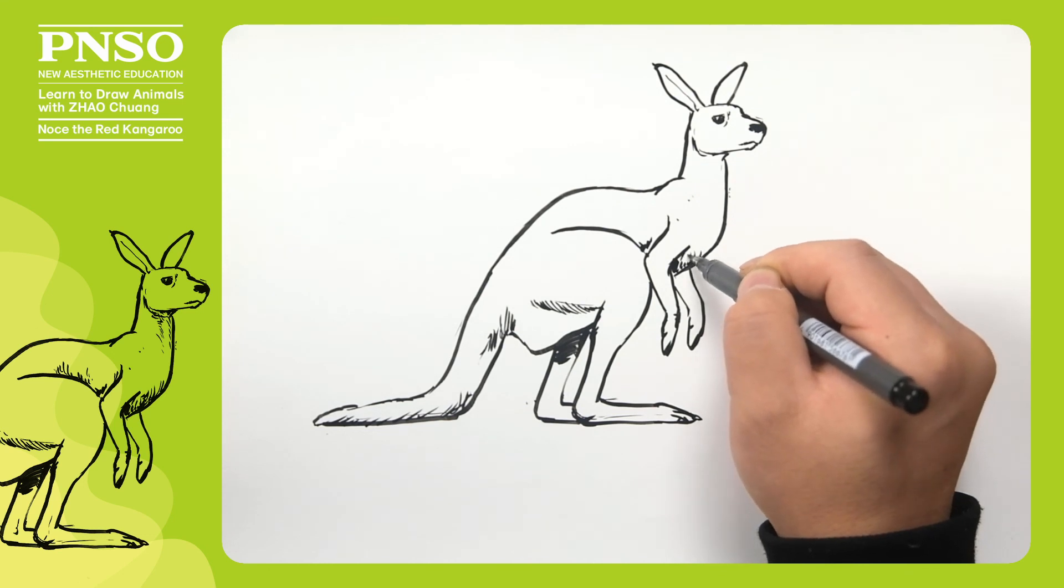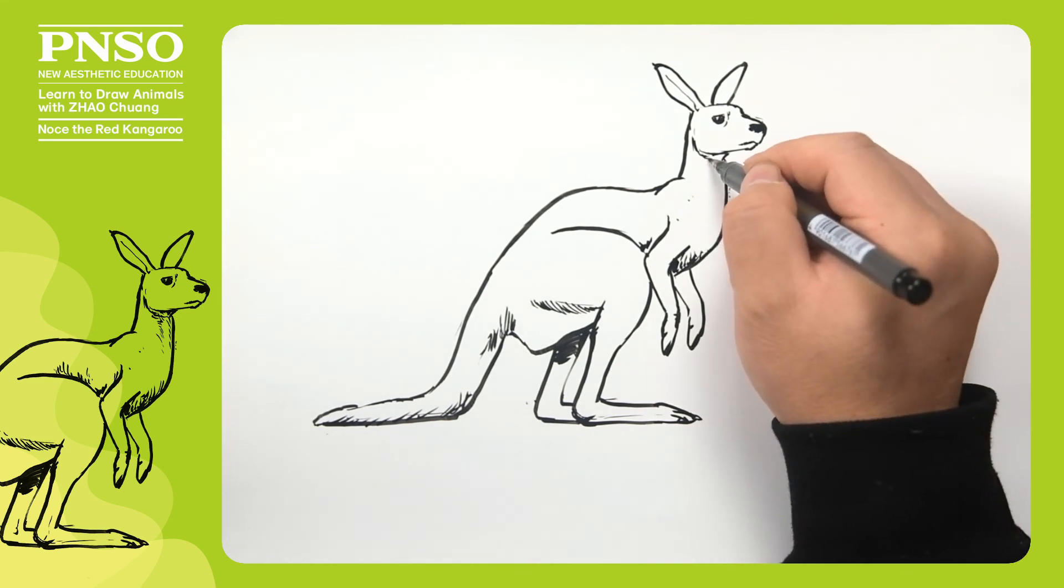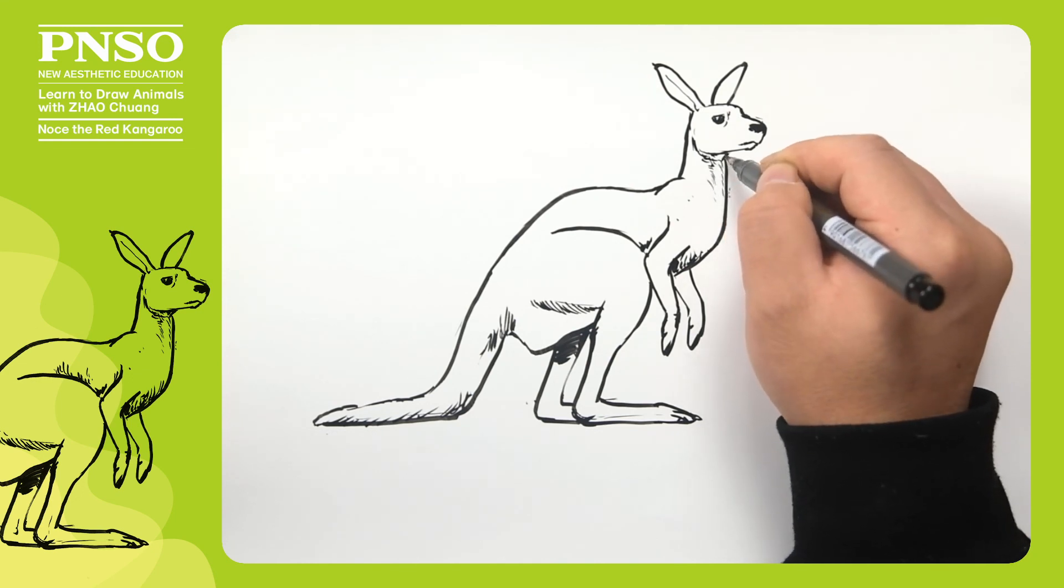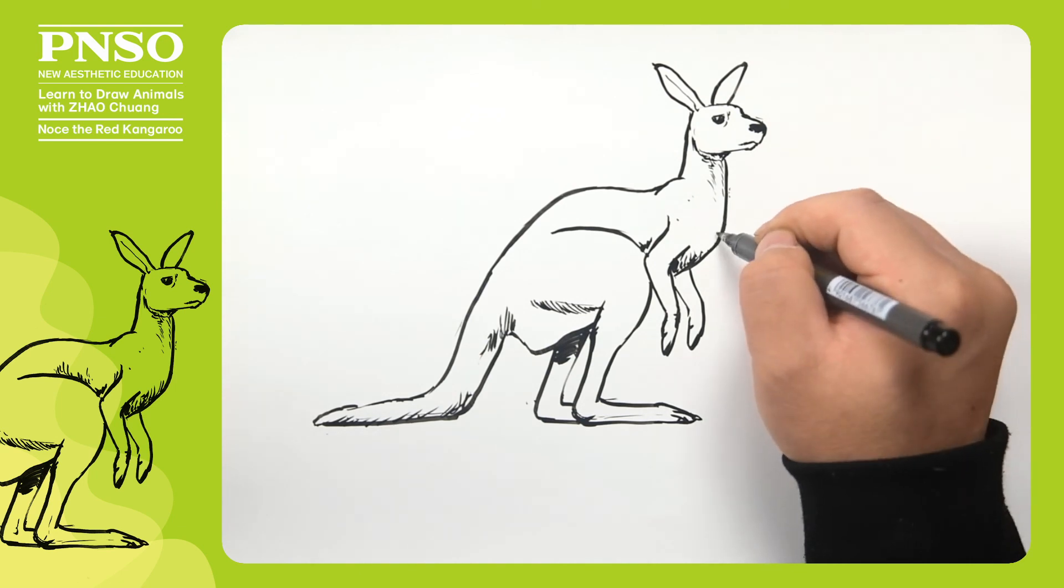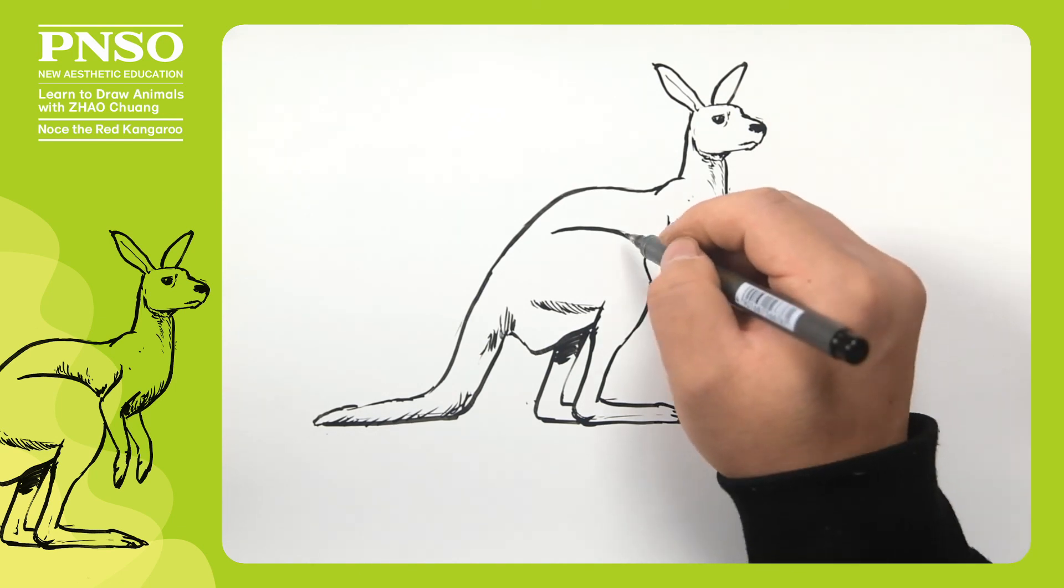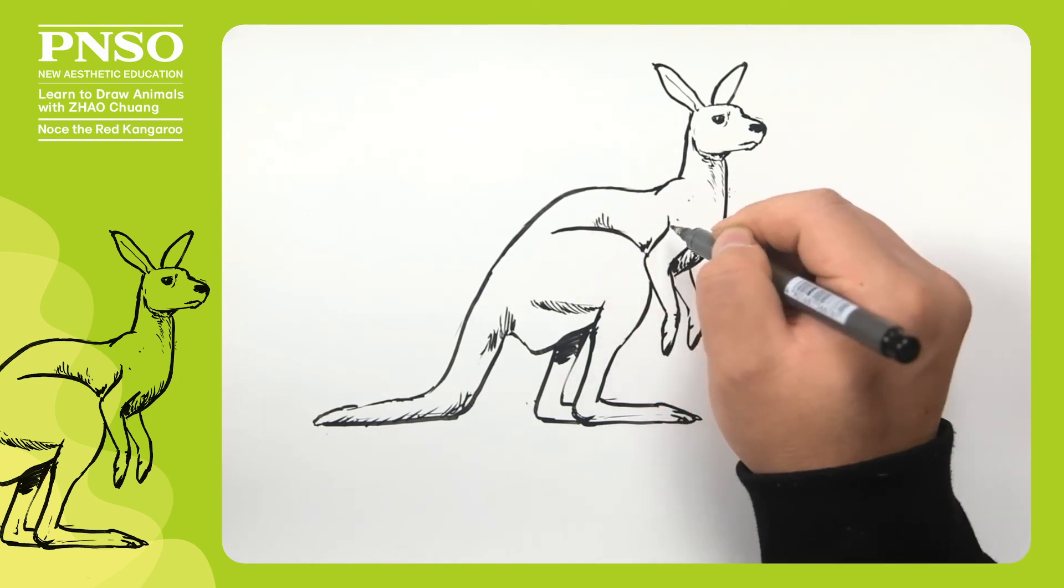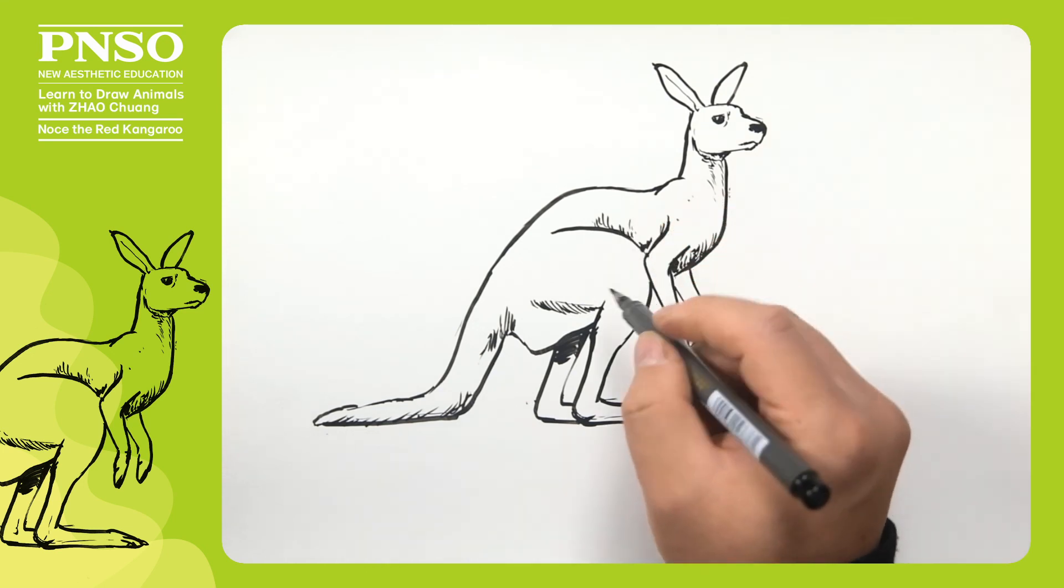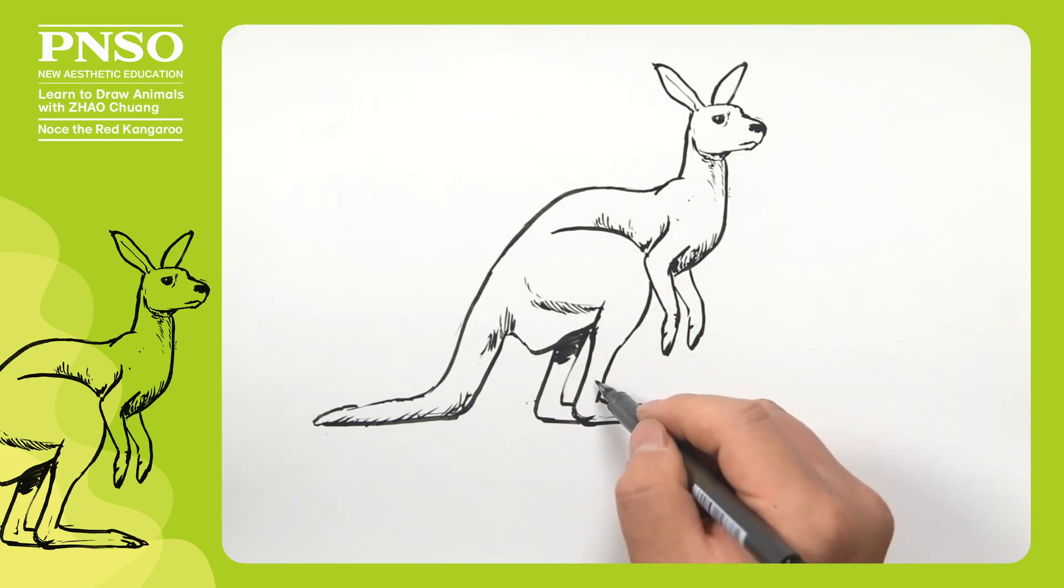Lastly, in the shadows, let's draw some fur with such small strokes. Following the direction of its body to show the sense of volume as well as the texture of its fur. Good like this, we've finished drawing the red kangaroo.